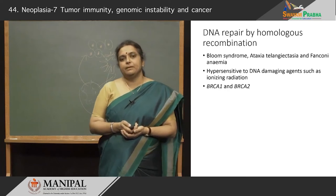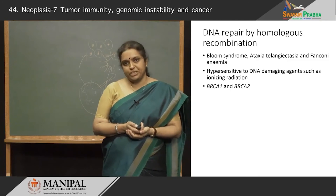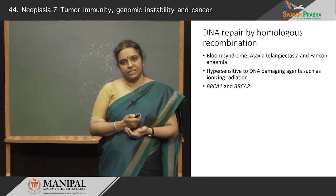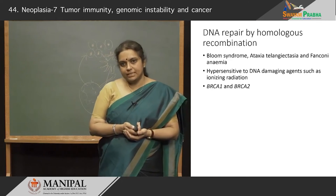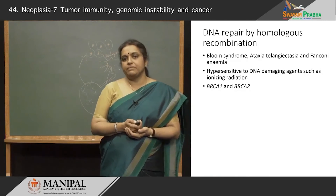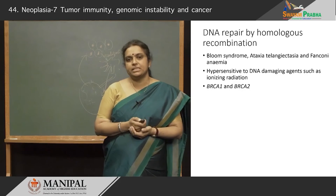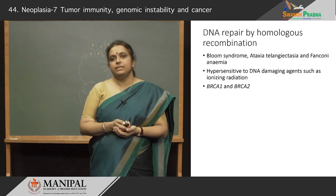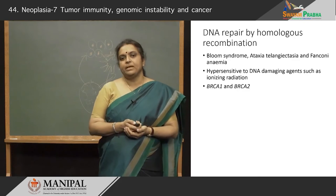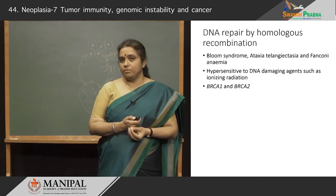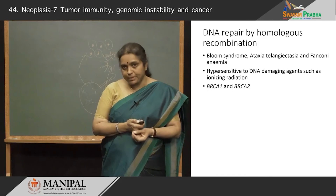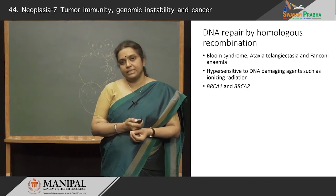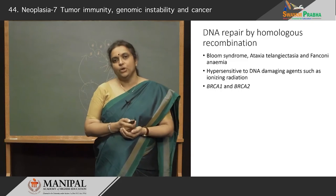The third example is defects in DNA repair by homologous recombination. Some of the syndromes associated with this defect are Bloom syndrome, Ataxia telangiectasia, and Fanconi's anemia. These patients have hypersensitive reactions to DNA-damaging agents such as ionizing radiation. BRCA1 and BRCA2 are implicated in familial breast cancer and these genes also act at the level of recombination repair. Patients who inherit mutations of these genes have defective repair by homologous recombination and tend to develop cancers of the breast, ovary, and others.